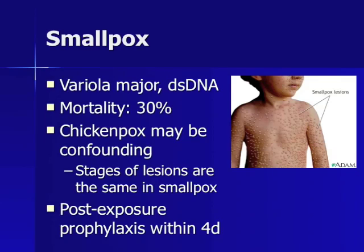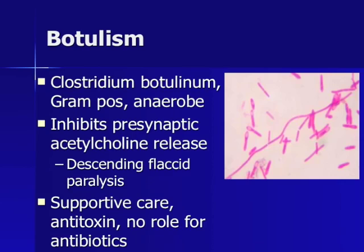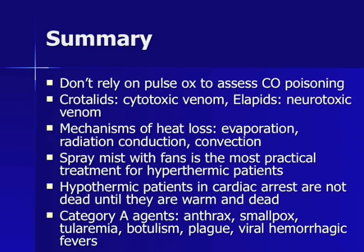Smallpox, also known as variola major, is a double-stranded DNA virus in the Poxviridae family. It is not currently found naturally and is confined to several laboratories around the world. During smallpox outbreaks in modern history, one out of every three who contracted the illness died. Chickenpox lesions may appear somewhat similar to smallpox; the key distinguishing characteristic is that smallpox lesions are all at the same stage of development, whereas chickenpox lesions are a mix of maculopapules, vesicles, and crusts. There is no treatment for smallpox; post-exposure prophylaxis and vaccination are the only methods of control. Botulism is caused by Clostridium botulinum, a gram-positive anaerobic bacteria which forms spores. It inhibits presynaptic acetylcholine release, causing a descending flaccid paralysis. Treatment is supportive care and antitoxin; there is no role for antibiotics.